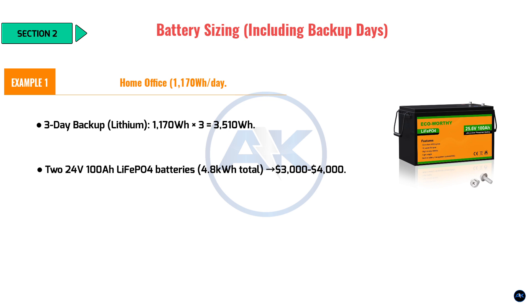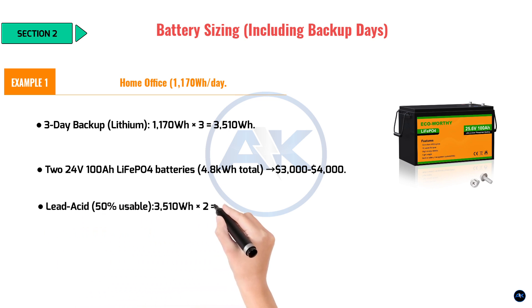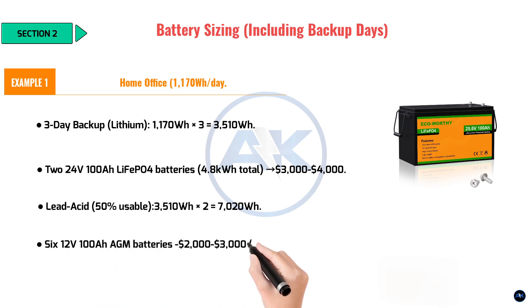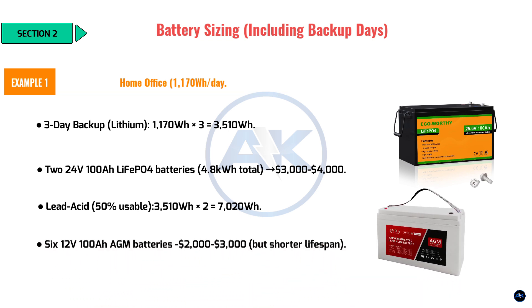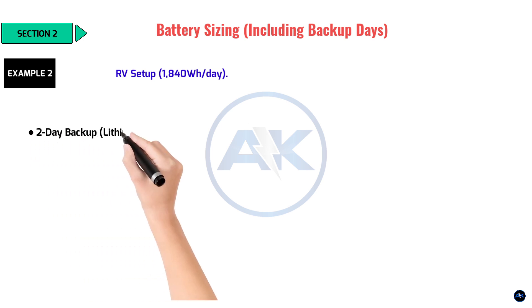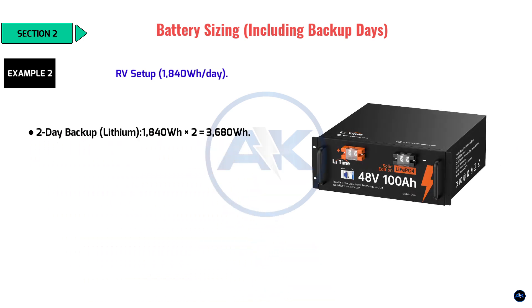Lead acid at 50% usable: 3,510 Wh × 2 = 7,020 watt-hours needed — six 12V 100Ah AGM batteries, $2,000–$3,000, but with a shorter lifespan. Example 2: RV setup — 1,840 watt-hours per day. One 48V 100Ah lithium iron phosphate battery = 5.1 kWh, costing $2,500–$3,500.